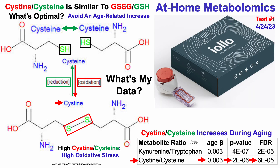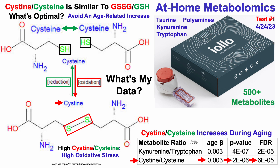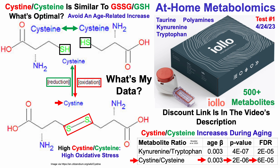So what's my data? In April of 2023, I sent blood for at-home metabolomics using the Iolo kit, which I've also used to look at kynurenine and tryptophan as part of the de novo NAD synthesis pathway. The kit also includes measurements of taurine and polyamines, both of which extend lifespan, plus data for more than 500 metabolites total. If you're interested in using this kit, there'll be a discount link in the video's description.